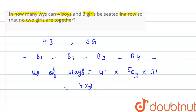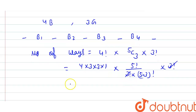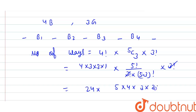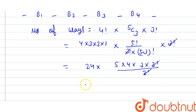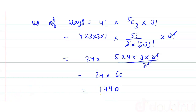The total number of ways is 4! × 5C3 × 3!. Expanding: 4! = 4 × 3 × 2 × 1 = 24. 5C3 = 5! / (3! × 2!) = (5 × 4 × 3!) / (3! × 2!) — the 3! cancels, and 2! cancels too — giving 10. So total = 24 × 10 × 6 = 1440. This is our final answer.